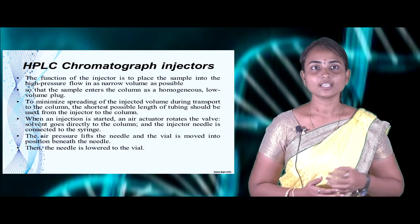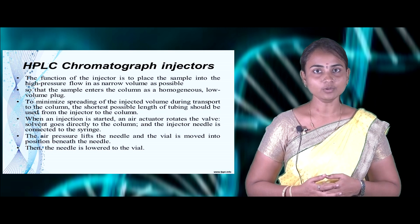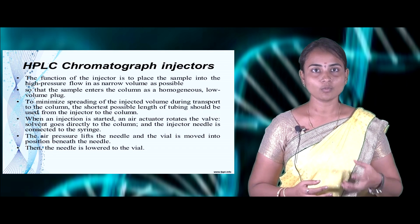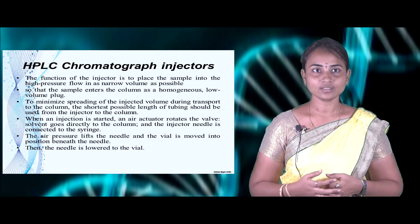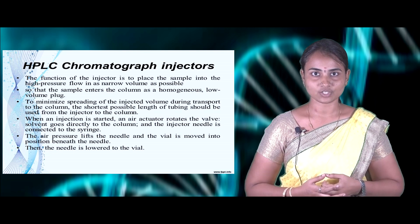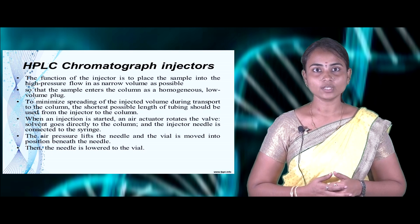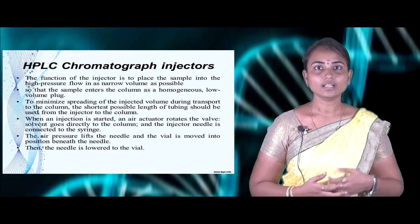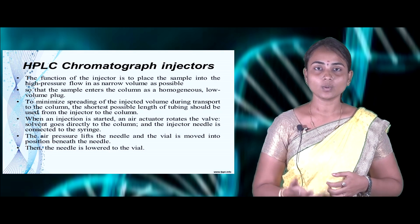Coming to the HPLC injector: the main function of the injector involves separating different samples and pushing them into the column through high pressure at a narrow volume, where the sample enters as a homogeneous, low-volume plug. To minimize spreading of the sample volume during transport into the column, the shortest possible length of tubing should be used. When injection starts, an air actuator rotates the valve while solvent goes directly to the column; the injector needle connected to a syringe is then lowered into the vial to aspirate the sample.